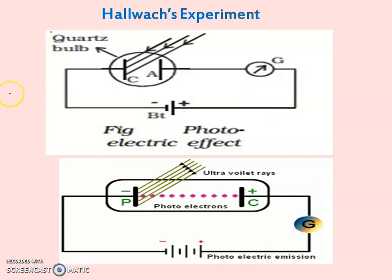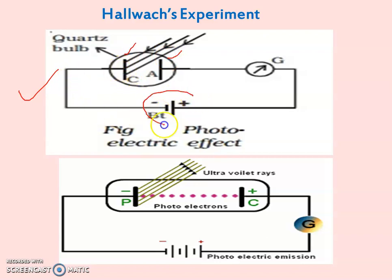This is the Hallwachs experiment — the first experiment performed demonstrating the photoelectric effect. The Hallwachs setup consists of a quartz bulb which is evacuated, meaning a vacuum is created inside the quartz bulb. Two electrodes are fitted and connected with a battery, and there is a galvanometer to detect whether current is present in the circuit.